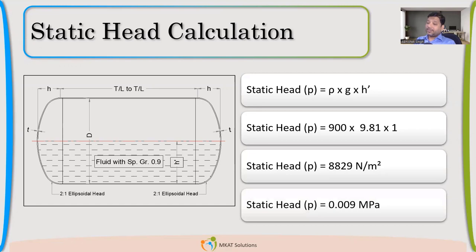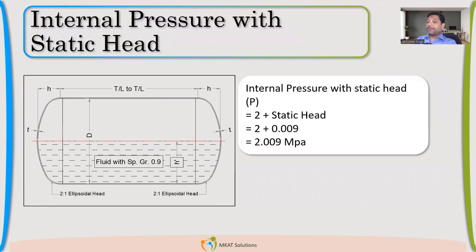So Newton per meter square is actually Pascal. Even Pascal is a very small unit for pressure. That is the reason we write MPa. We generally use MPa when we talk about pressure because MPa is more meaningful, but otherwise we have to write big values for pressure if we write in terms of Pascal. So once I have that static head, I have added that to the internal pressure. Yes Subham, absolutely right. 2.009 MPa will become my internal pressure.